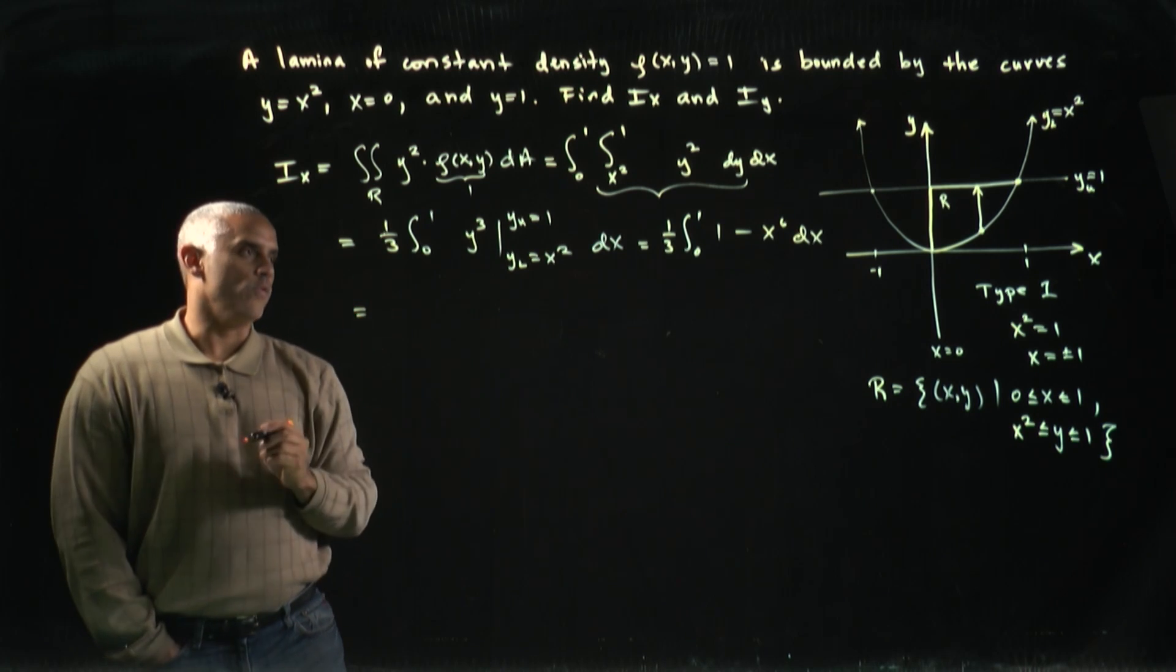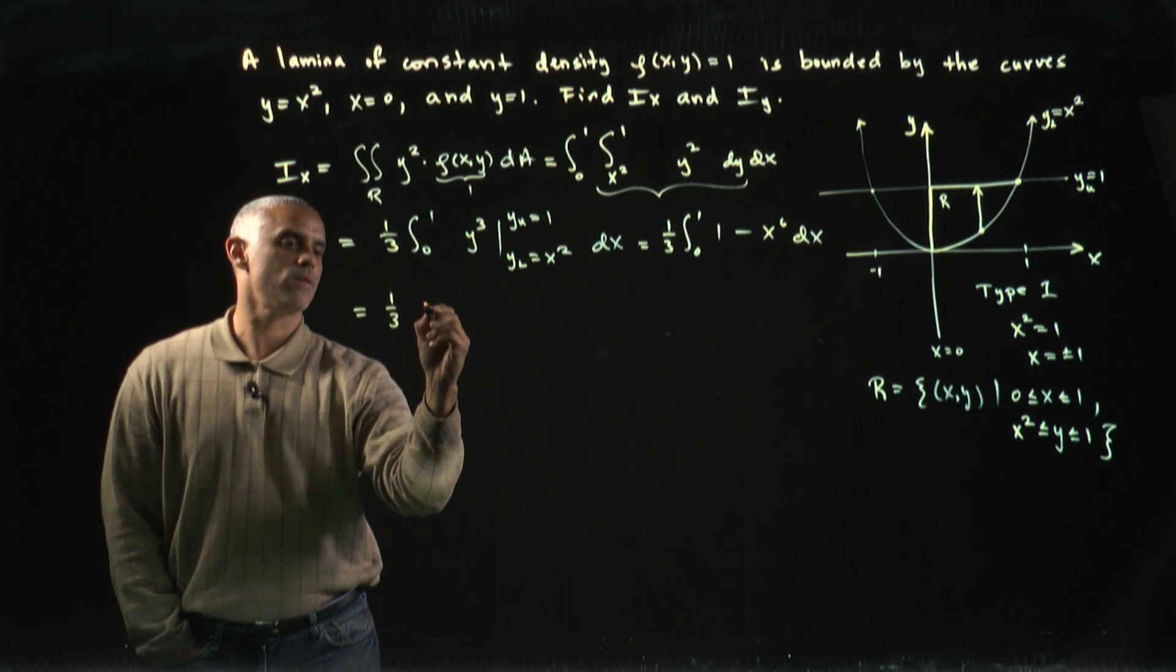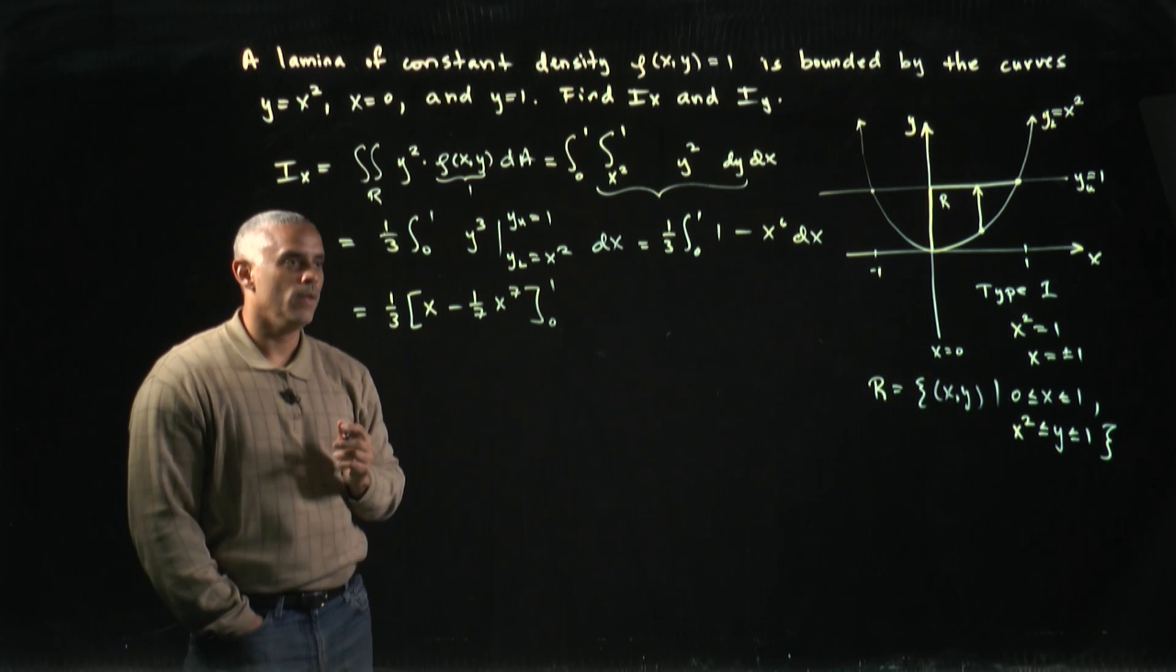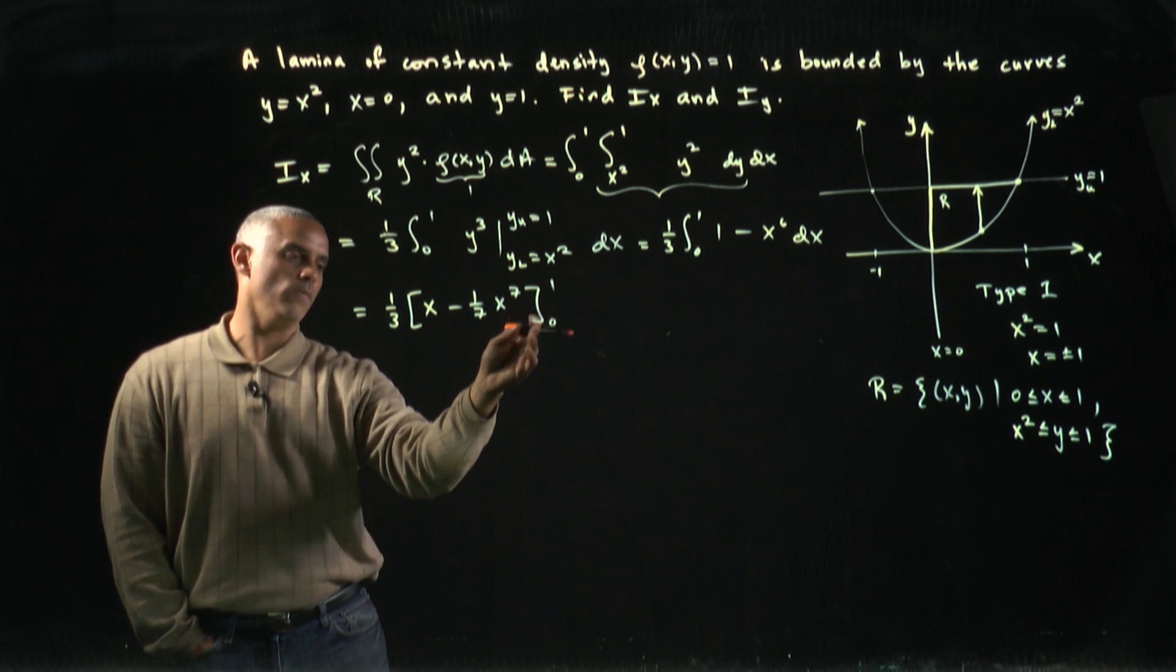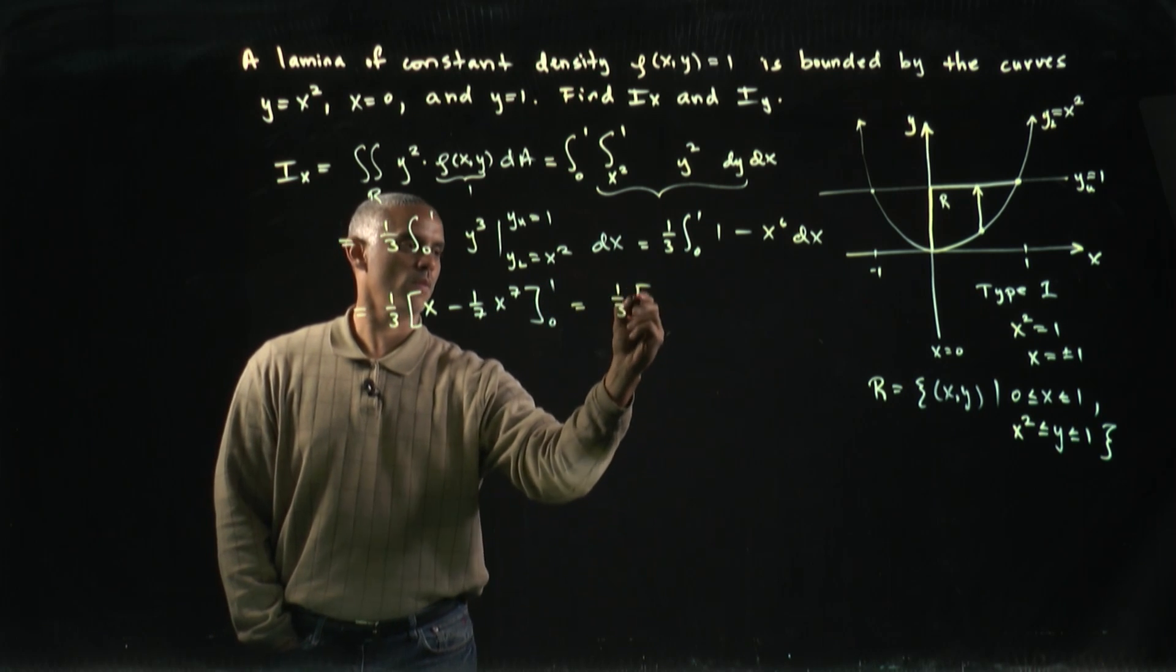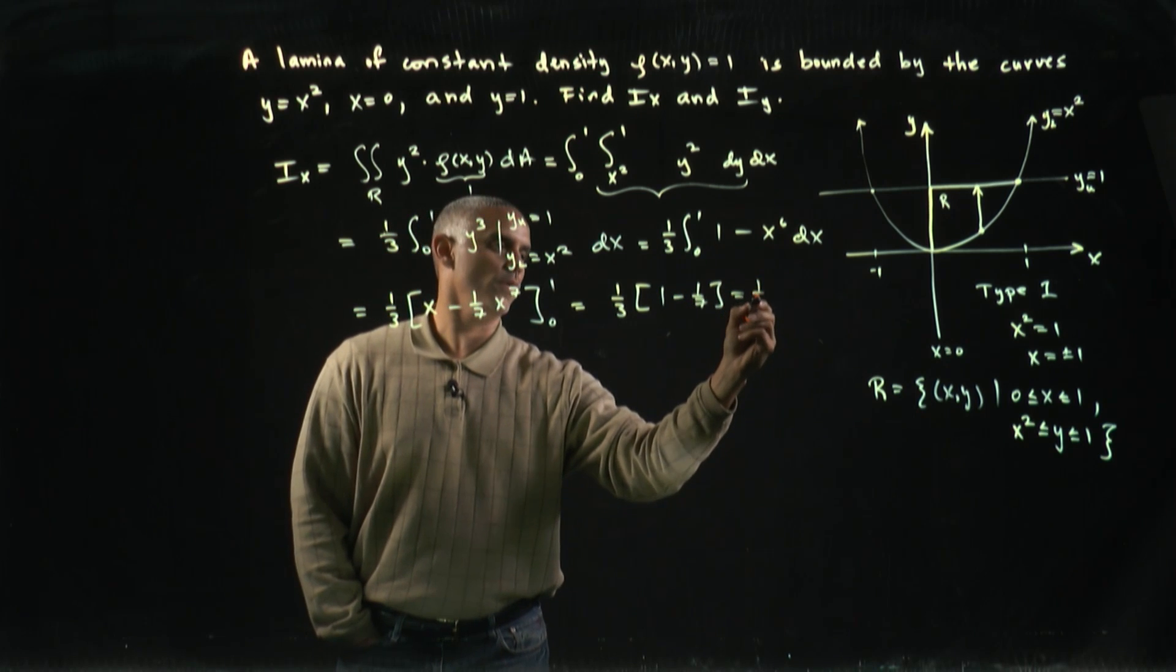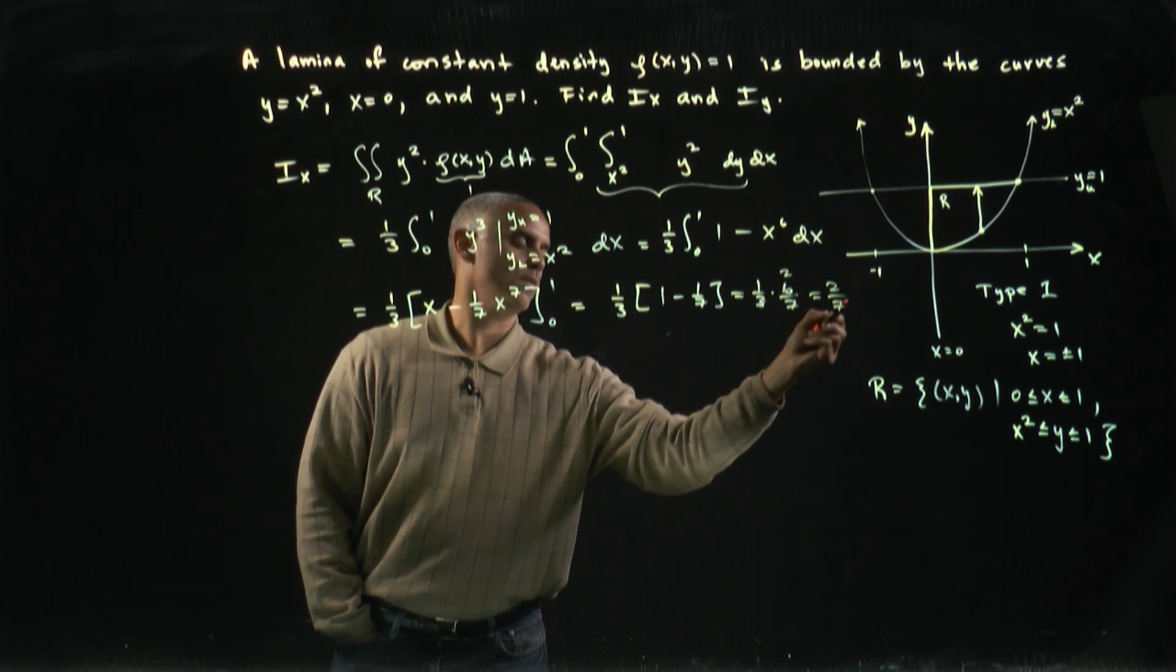So it's pretty straightforward. They're polynomial functions. I'll get one third of x minus one seventh x to the seventh, and I'll evaluate that from 0 to 1. It's clear that this will vanish at the lower bound when I use the evaluation theorem, and only survive at the upper bound, so I'll get one third of 1 minus one seventh. Seven sevenths minus one seventh is six sevenths times a third, and then three goes into six two times, so I just get two sevenths.